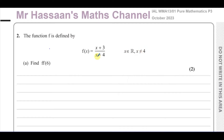x cannot equal 4 because it will cause the denominator to become 0, which makes the function undefined. So we can say this will have a vertical asymptote when x equals 4 — you can never touch that line x equals 4.